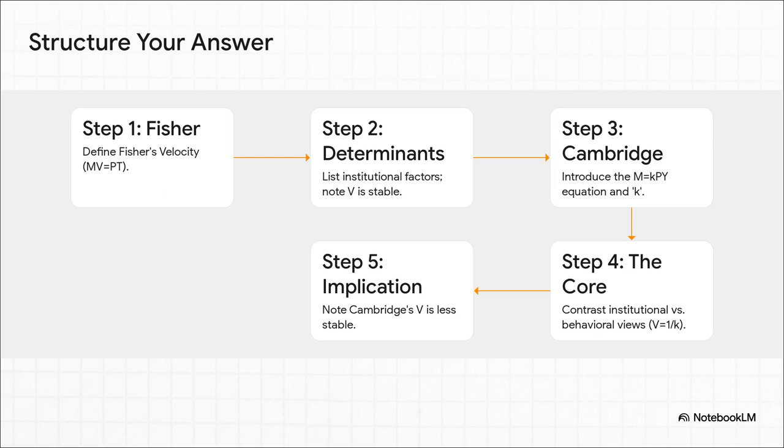Here is your game plan. You start with Fisher. Define his version of V. It's stable. It's driven by institutions. Then you pivot to Cambridge. You introduce their behavioral idea of K. Now this next part, step four, is absolutely critical. You have to directly contrast the two. And you must use that V equals 1 over K formula to show you understand the connection.